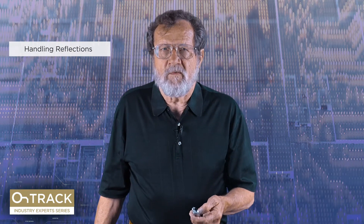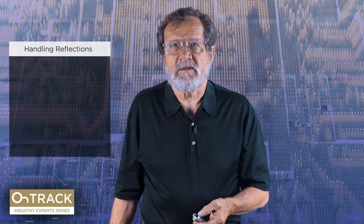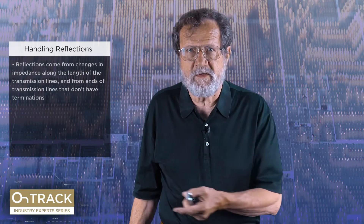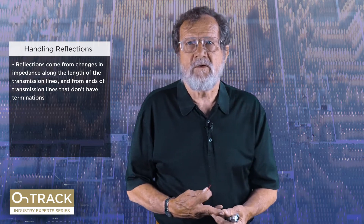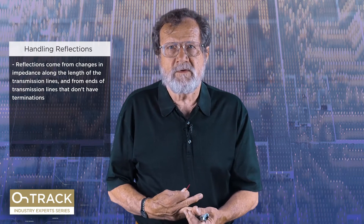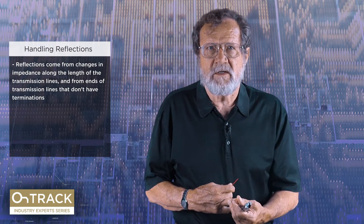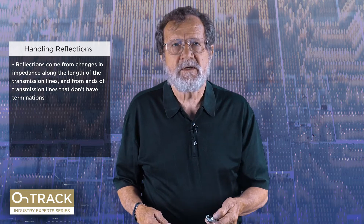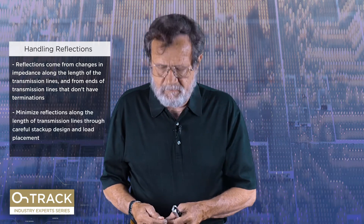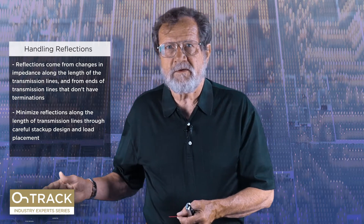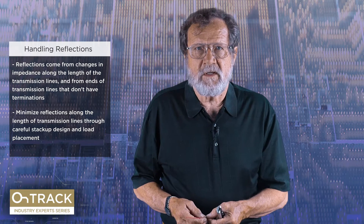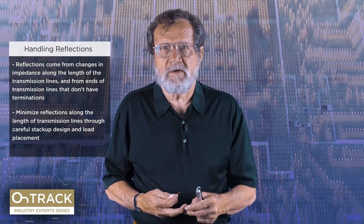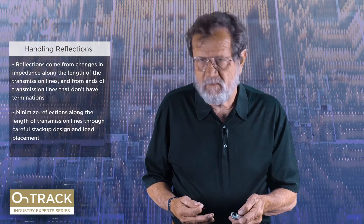So let's talk about reflections first. These happen when we have changed impedance along the transmission line and a signal traveling down there gets some of it reflected back, or maybe off the end of the transmission line. We will control reflections off the end of the line with terminations, and we're going to minimize reflections along the length of line — making sure that the impedance does not change as we go from one end to the other. Careful stack-up design is required to do that, and care with where we put the loads.